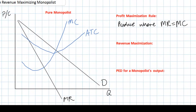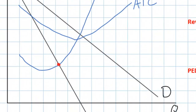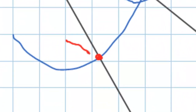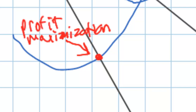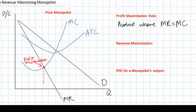Let's look at our graph and determine what the profit maximizing level of output for this monopolist is. We have our marginal revenue curve sloping downwards and marginal cost sloping upwards, but there is clearly a point at which marginal revenue equals marginal cost. This point is our profit maximization point. A monopolist hoping to maximize total profits should produce at the level of output where marginal revenue equals marginal cost — we'll call that quantity QPM, the profit maximizing quantity.